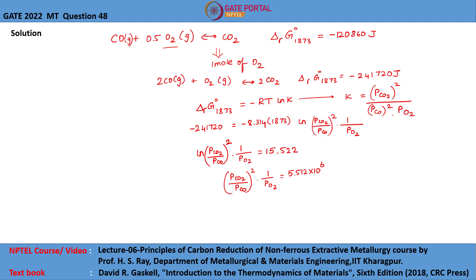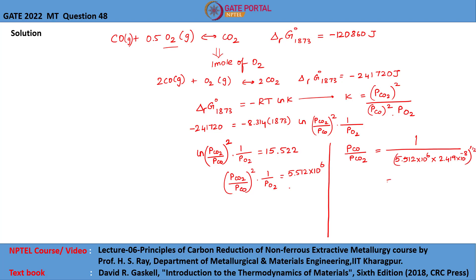Since the value of PO2 has already been found under equilibrium conditions at 1873 Kelvin, we substitute that value into this equation. So pCO by pCO2 equals 1 divided by 5.512 × 10⁶ multiplied by PO2, where PO2 is 2.419 × 10⁻⁸, raised to the power 1/2. This equals 1 divided by 0.1333 to the power 1/2, which equals 1 by 0.365. Therefore, the value of pCO by pCO2 equals 2.74, which is the answer.